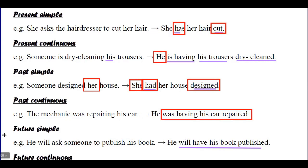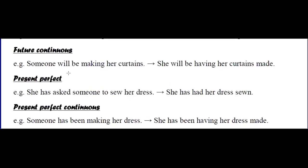More causative examples: 'He will ask someone to publish his book' → 'He will have his book published.' 'Someone will be making her curtains' → 'She will be having her curtains made.' 'She has asked someone to sew her dress' → 'She has had her dress sewn.' 'Someone has been making her dress' → 'She has been having her dress made.'